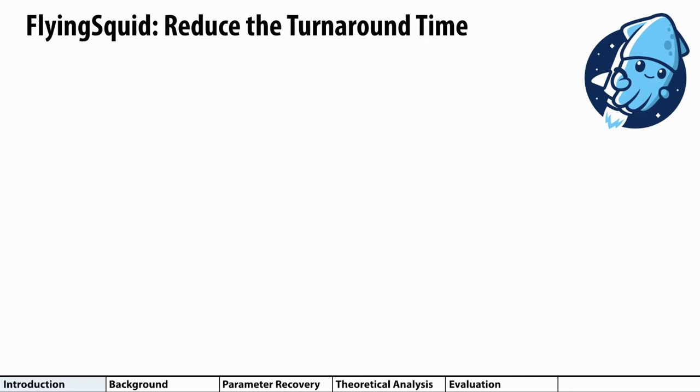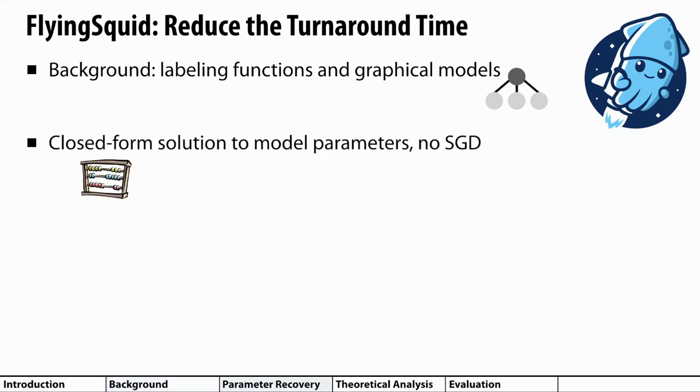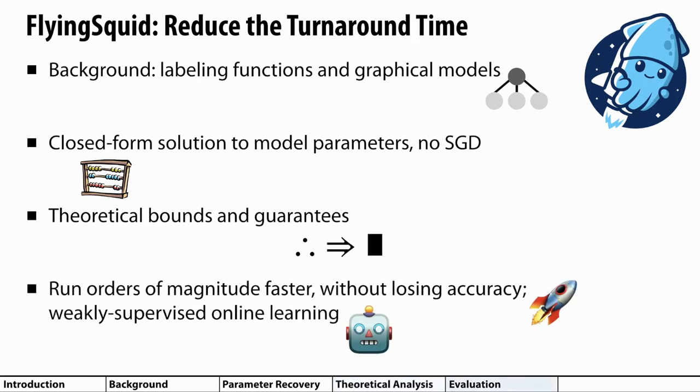To explain how we achieve this with FlyingSquid, I'll first give some background on how current weak supervision systems use graphical models to model labeling function behavior. Then, I'll explain how we use the method of moments to get a closed form solution to recovering these graphical model parameters instead of using stochastic gradient descent. Next, I'll briefly summarize our theoretical analysis, showing that this method is sometimes information theoretically optimal up to constant factors and learns at asymptotically the same rate as using gold labels. Finally, I'll discuss the evaluation and implications of our technique.